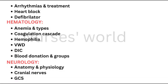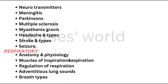Neurology — anatomy and physiology, cranial nerves — important — and GCS. Neurotransmitters, meningitis and its types, Parkinson's, multiple sclerosis, myasthenia gravis, headache and its types, stroke and types, and seizure.